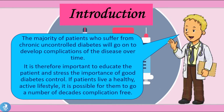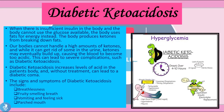Now that we know why some of these complications may manifest over long-term uncontrolled diabetes, let's take a closer look at some of these complications. The first complication we're going to talk about is called diabetic ketoacidosis.